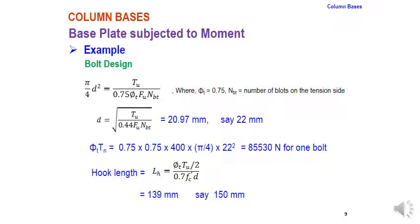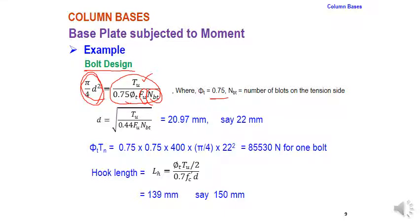The design is not complete since anchor bolts are required. The bolt area is calculated based on the tensile force Tu = 54.8 kN developed in the bolt. With phi_t = 0.75, n_t bolts on the tension side, and using Fu, the required bolt diameter = 20.97 mm, rounded up to 22 mm.